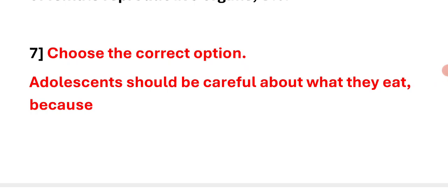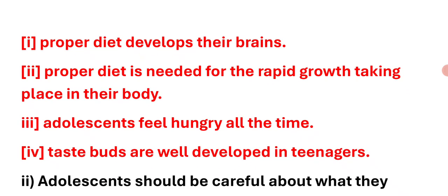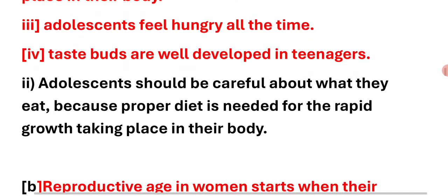Choose the correct option. Adolescents should be careful about what they eat because: Option A — proper diet develops their brains; Option B — proper diet is needed for the rapid growth taking place in their body; Option C — adolescents feel hungry all the time; Option D — taste buds are well developed in teenagers. Right answer: Option B — proper diet is needed for the rapid growth taking place in their body.